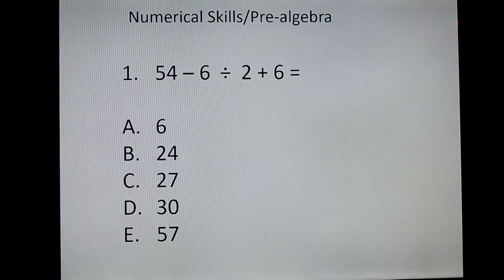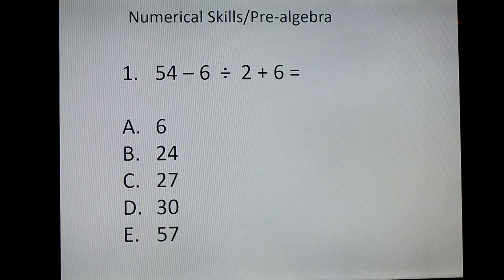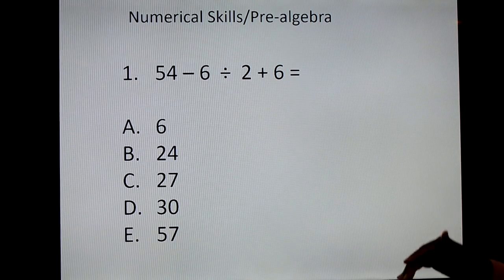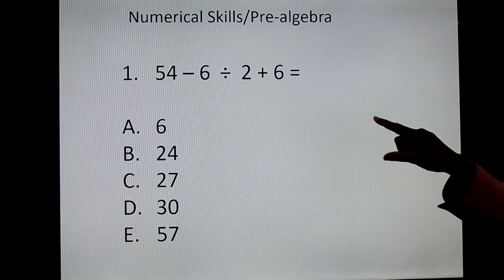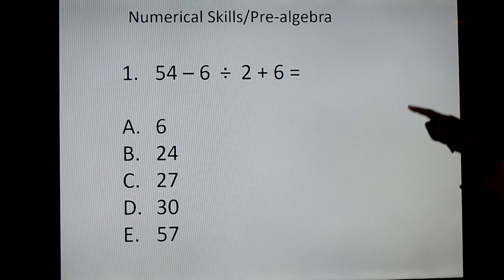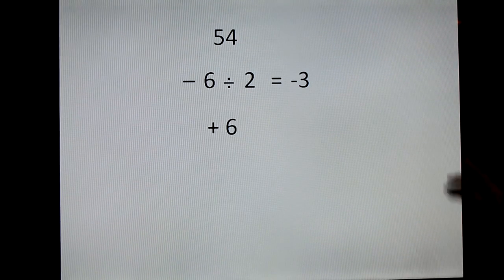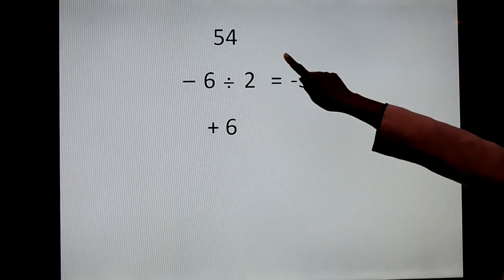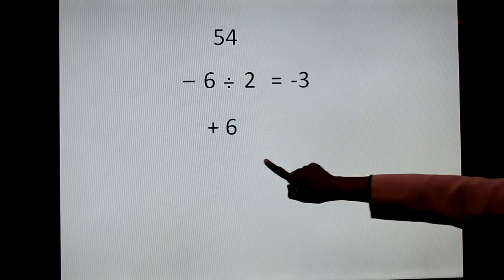The sign in front of this 6 stays with this 6. So if you have a positive sign or a negative sign, regardless of which one it is, it's always going to stay with the number that it's in front of. And because the division sign is between the 6 and the 2, they're all sort of stuck together. So with that said, I've broken it down for you and here it is in broken down form.